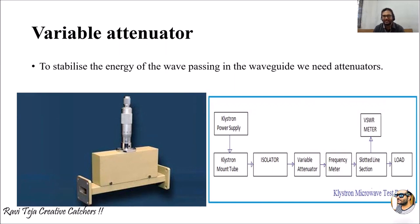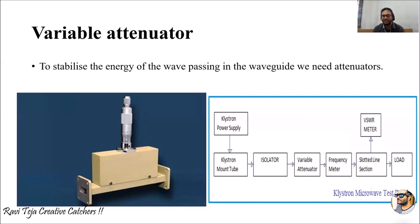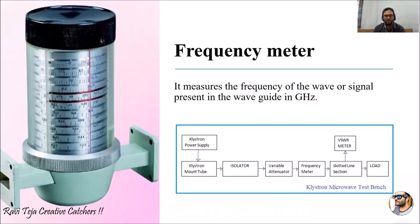The next block is the variable attenuator. Its main purpose is to stabilize the energy of the wave passing in the waveguide. Sometimes the microwave signal may have high or low power fluctuations, so the attenuator is used to balance the power — to avoid fluctuations. With a variable attenuator, the user can alter the power present in the microwave signal according to preference.